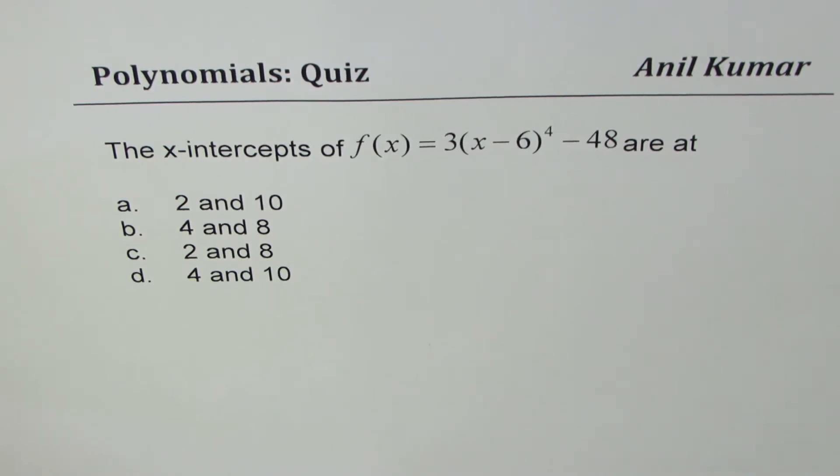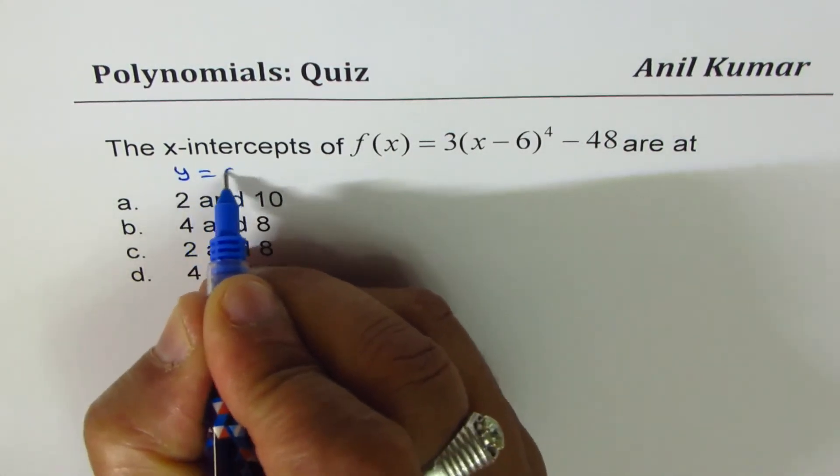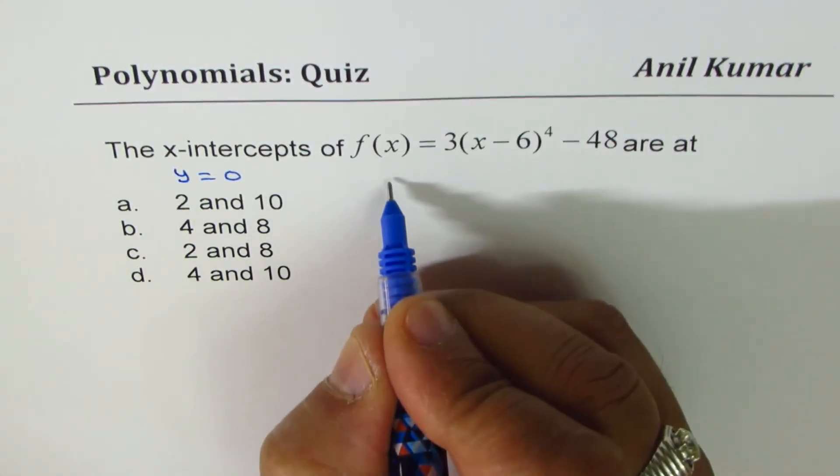do your calculations as we did in the first part of this video. And then look into my solution. So again, we will perform the same steps. x-intercepts means what? Where y is equal to 0. So substitute f(x) as 0 here.